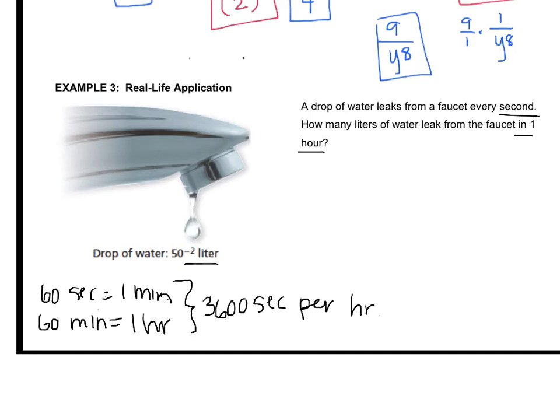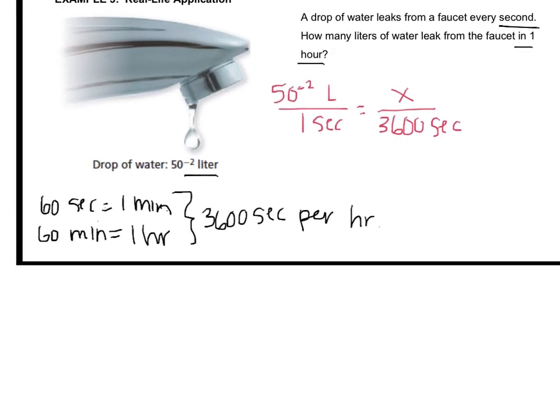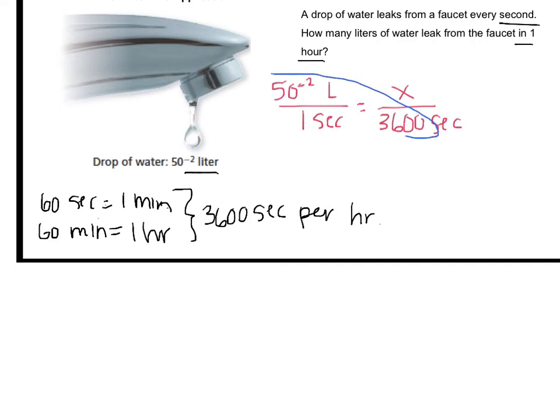Now that I know that, I can solve the question a little more. This makes me think of 7th grade proportions. I get 50 to the negative 2 liters in one second, and I want to know how many liters that is in 3,600 seconds. So let's do it. I'm going to cross multiply, because that's what you learned back in 7th grade. So I get 1 times x, which is 1x. And then I'm just going to write this 3,600 times 50 to the negative 2.